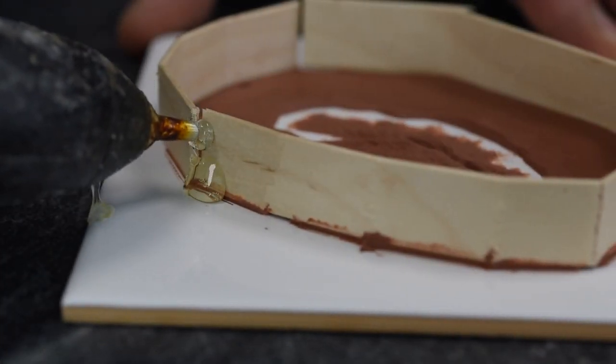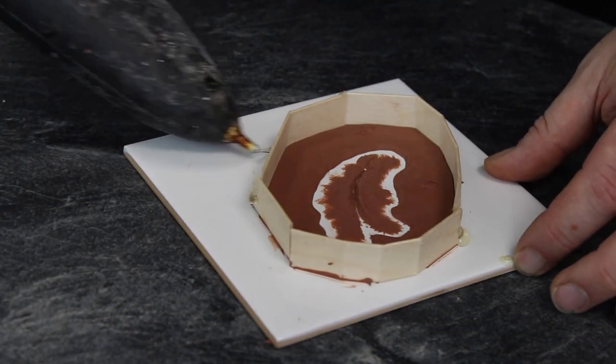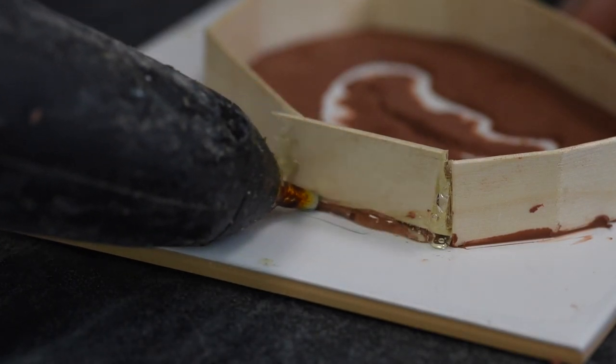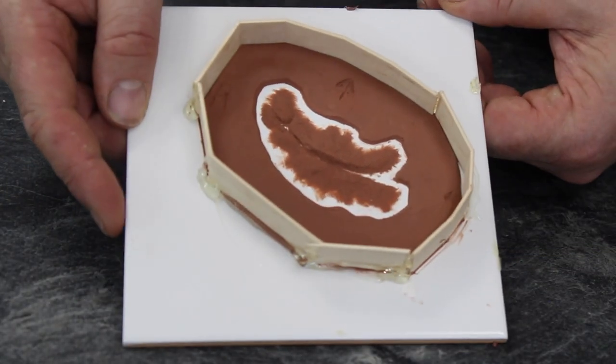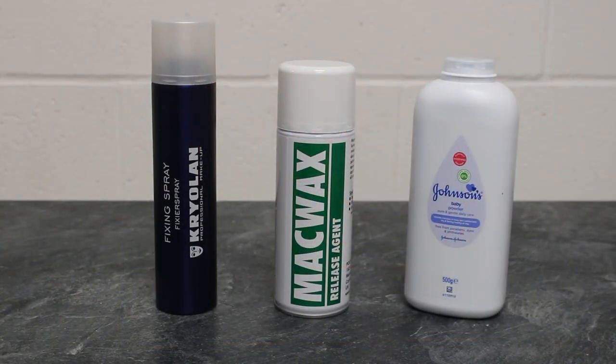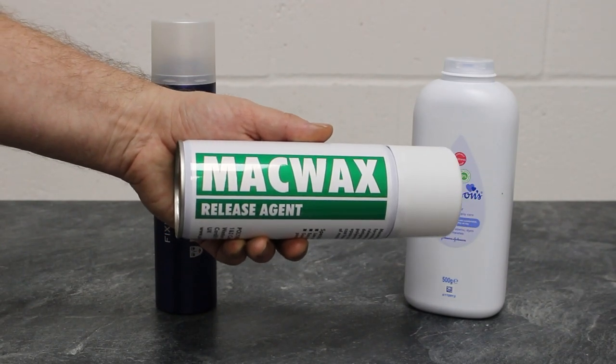I've taken regular mixing sticks and created a little retaining wall all the way around because we're going to fill this with plaster. I'm going to use a little release agent - this is Mac Wax, a wax spray.